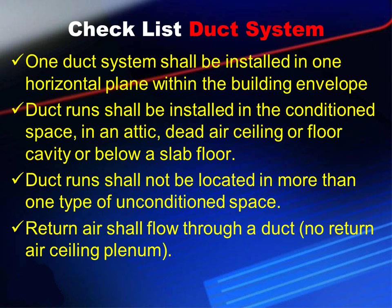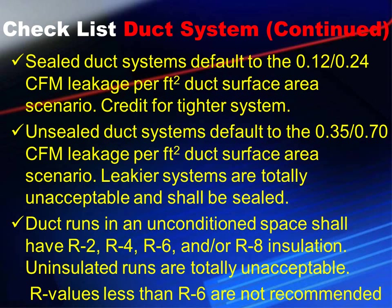Duct systems: the duct system shall be installed in one horizontal plane within the building envelope. Duct runs shall be installed in a conditioned space, attic, dead air ceiling, floor cavity, or below a slab floor. Duct runs shall not be located in more than one type of unconditioned space. Return air shall flow through a duct — no return air ceiling plenums. Sealed duct systems default to 0.12–0.24 CFM leakage per square foot of duct surface area. Unsealed duct systems default to 0.35–0.70 CFM per square foot. Any leakier systems are totally unacceptable and shall be sealed.